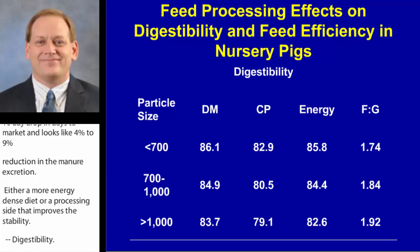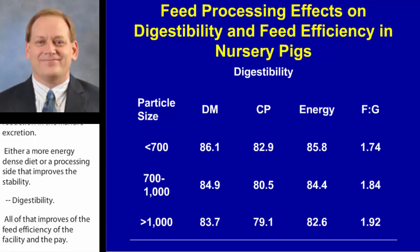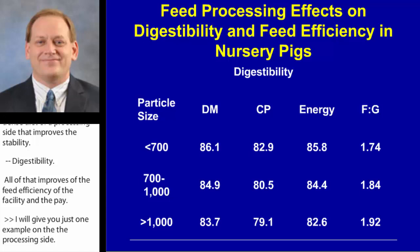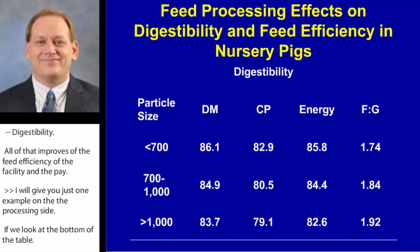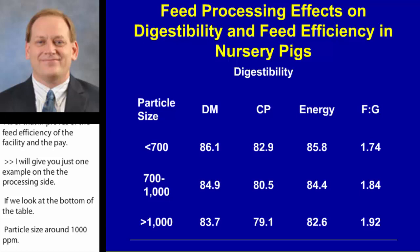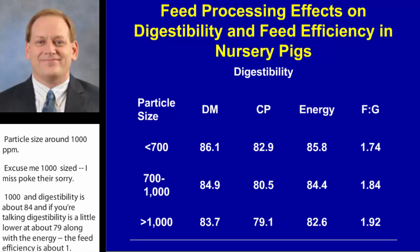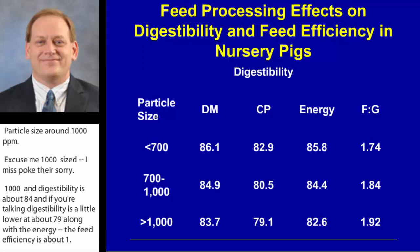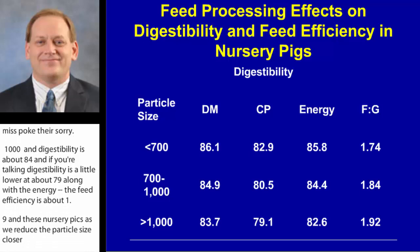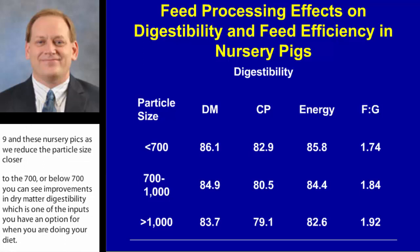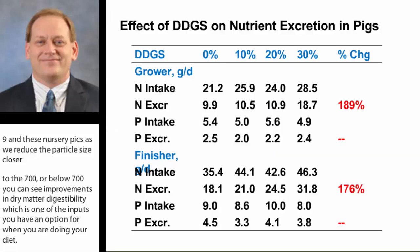As an example on the feed processing side: at a particle size around 1,000 microns, dry matter digestibility is about 84%, crude protein digestibility is about 79%, along with energy digestibility, and feed efficiency is about 1.9 in nursery pigs. As we reduce particle size closer to or below 700 microns, you can see improvements in dry matter digestibility — which is one of the inputs you have an option for when entering your diets. Those changes in dry matter digestibility change the efficiency of utilization and feed efficiency, all of which impact nutrient excretion.